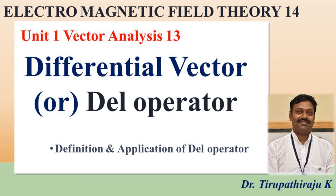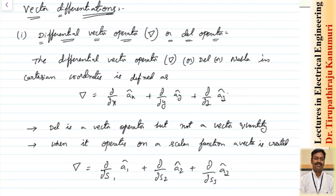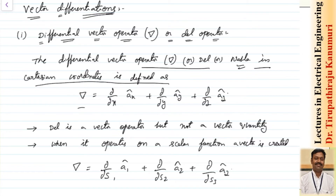Hi all, today we are going to discuss the vector differential operator, also called the differential vector operator, del operator, or nabla. This differential vector operator or del or nabla in Cartesian coordinate systems is defined by — it is just represented by the inverted triangle symbol.